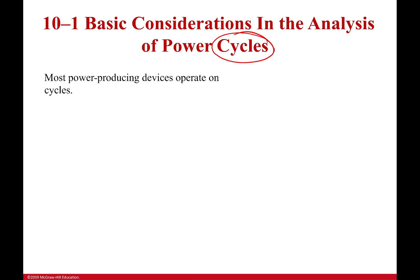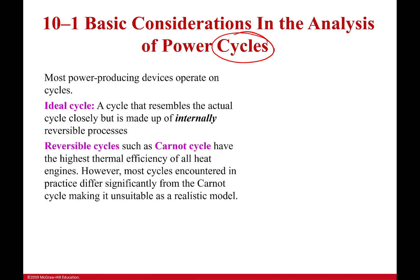Most power producing devices operate on these cycles. We need to define some details. First off, most of the time we're talking about ideal cycles. Ideal simply says that it's ideal. We're not taking into account a lot of the irreversibilities. We're assuming that it's internally reversible. It's as close to reality as we can get, but we're saying it's isentropic, isothermal, all these things that sound really nice, but we don't actually see in reality. We get close, it's just not perfect.